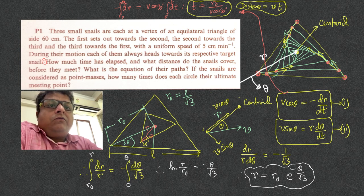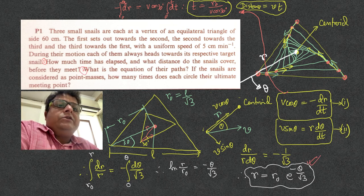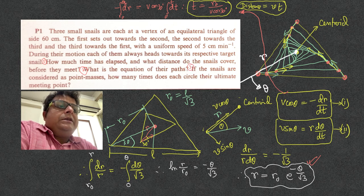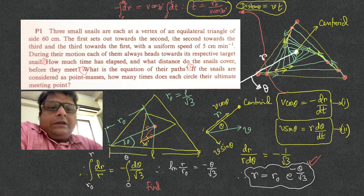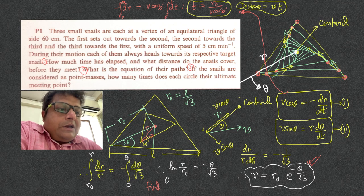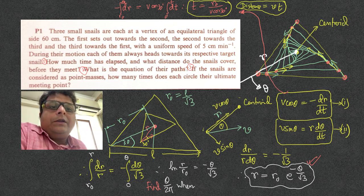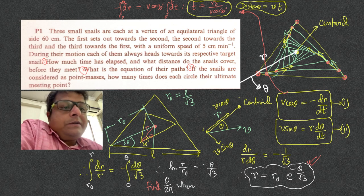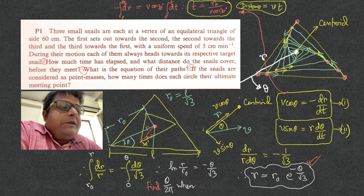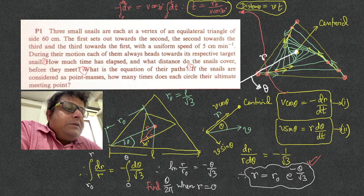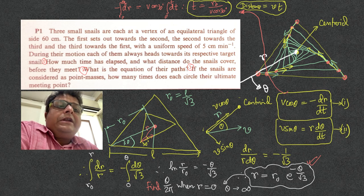Next, part three: how many times does each snail circle their ultimate meeting point? You need to find θ/(2π) — the total angle traversed divided by 2π gives the number of revolutions. From the equation r = r₀·e^(−θ/√3), when r equals 0, theta is infinite. So the number of revolutions is infinite — that's the answer.